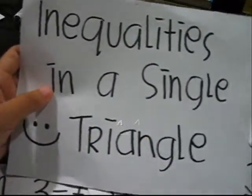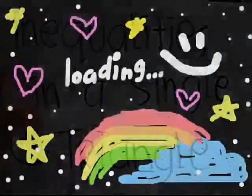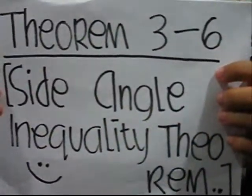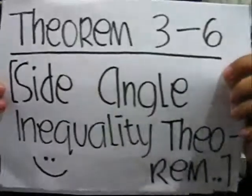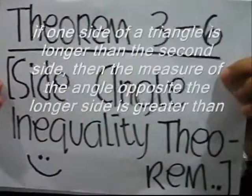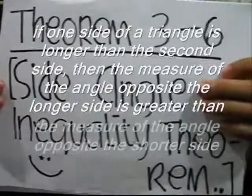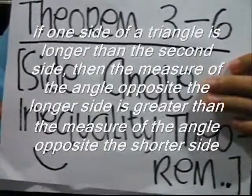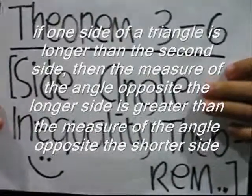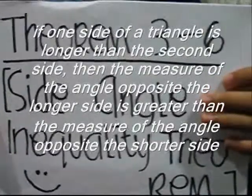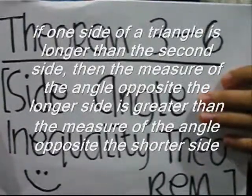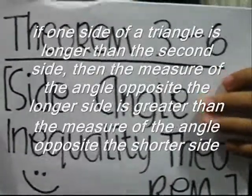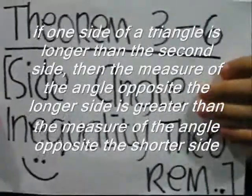For the inequalities in a single triangle, we have Theorem 3-6, the Side Angle Inequality Theorem. This states that if one side of a triangle is longer than the second side, then the measure of the angle opposite the longer side is greater than the measure of the angle opposite the shorter side.